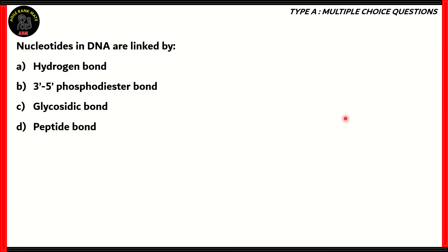Let's start off with our first question. Nucleotides in DNA are linked by: hydrogen bonds, 3' to 5' phosphodiester bonds, glycosidic bonds, or peptide bonds. Which of these is the correct answer?